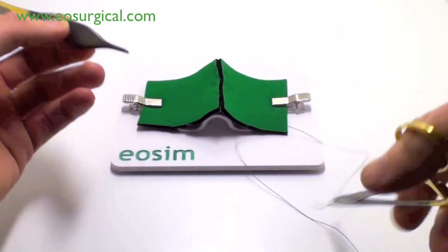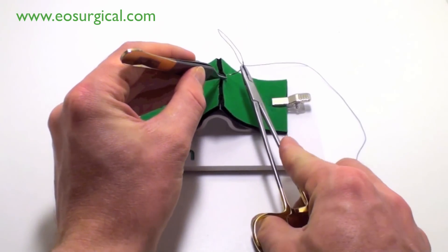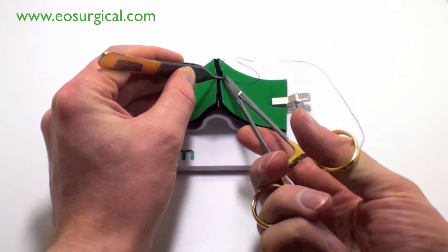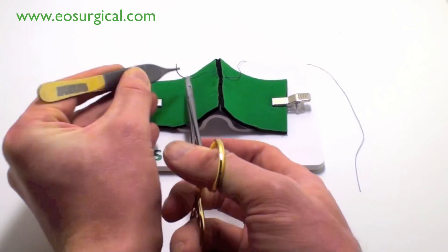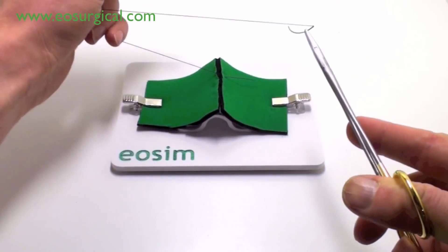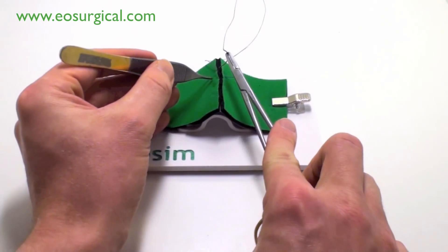Now, let's look at this from a more expanded point of view. This will show you what the surgeon's hands are doing. Again, note how the wrist is rotating to allow the suture and needle to curve through the tissues.